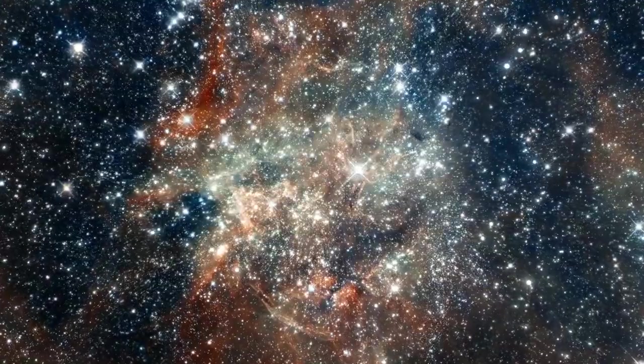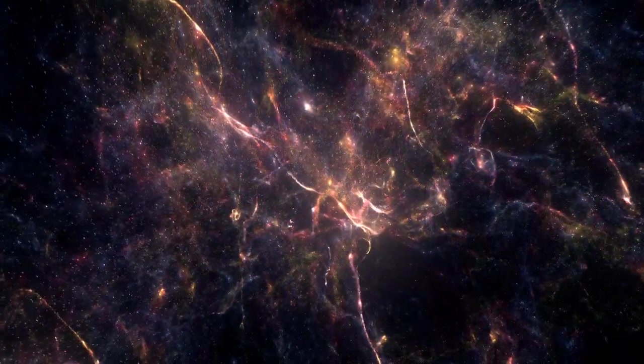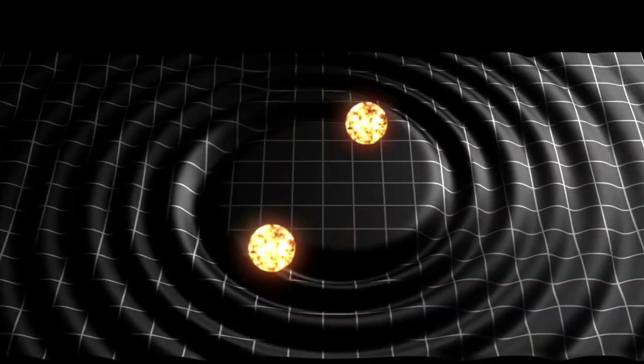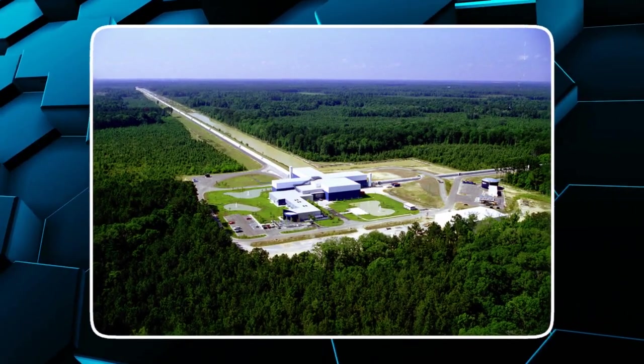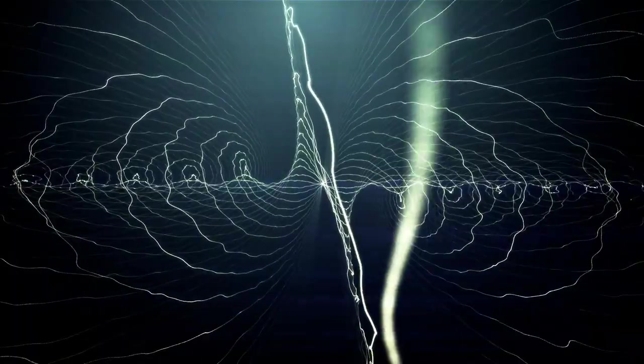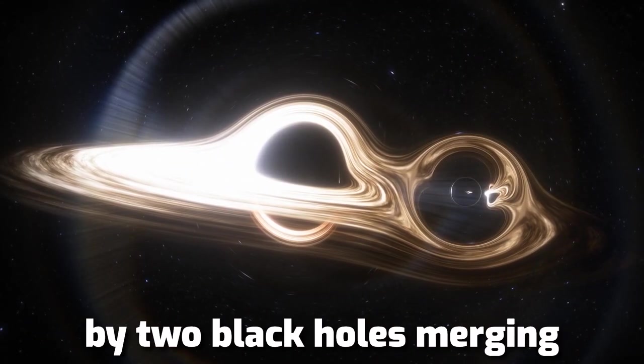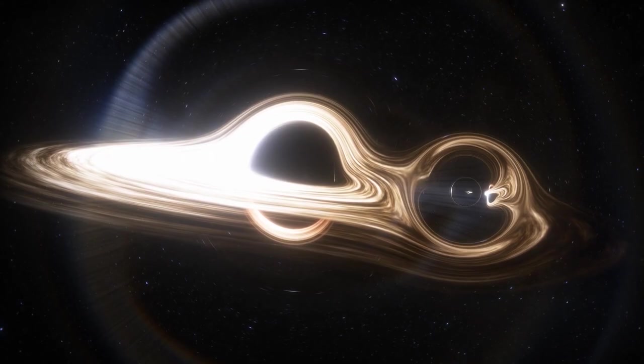Albert Einstein predicted more than a century ago that the movement of massive objects in the universe would cause tiny ripples in the fabric of space-time known as gravitational waves. He also predicted that those waves would be undetectable. Scientists at the Laser Interferometer Gravitational Wave Observatory proved Einstein right and wrong in 2015, when they recorded gravitational waves caused by two black holes merging, earning them the Nobel Prize in Physics.